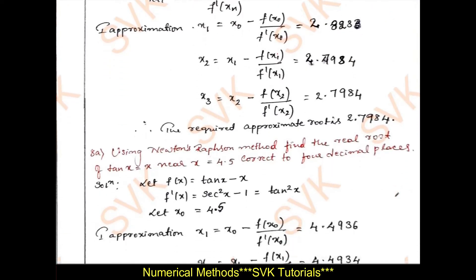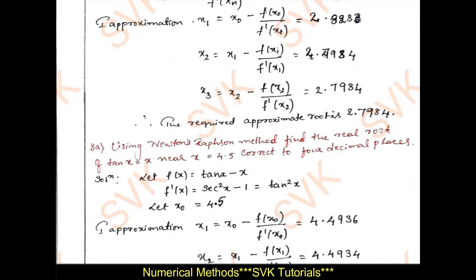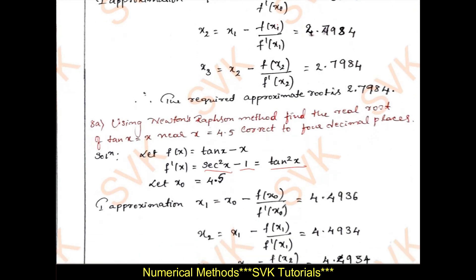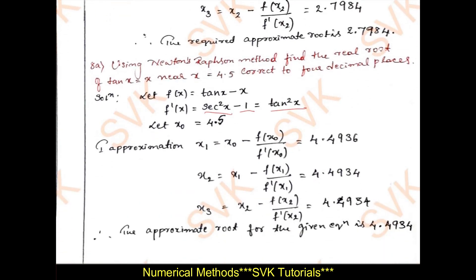The next problem is similar but uses tan x minus x instead of x tan x. The derivative of tan x is secant squared x, minus derivative of x is 1. Using the standard identity, secant squared x minus 1 equals tan squared x. Using this definition, we can solve and get the approximate root as 4.4934.